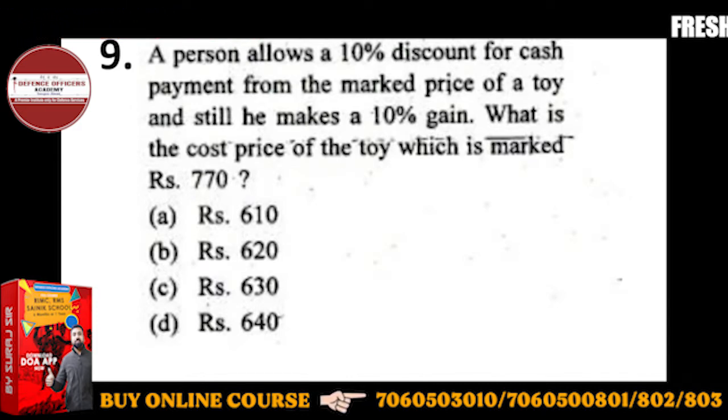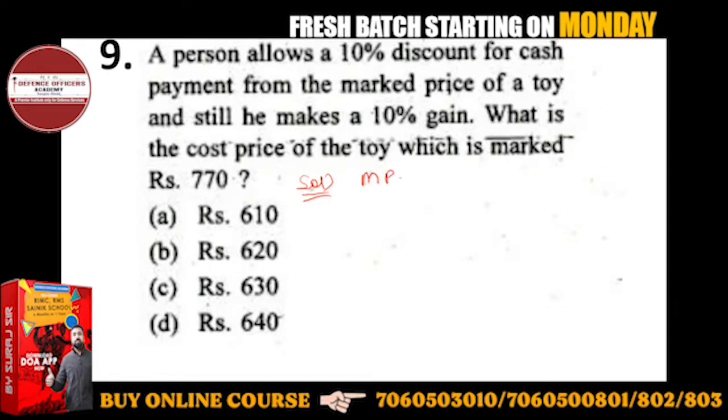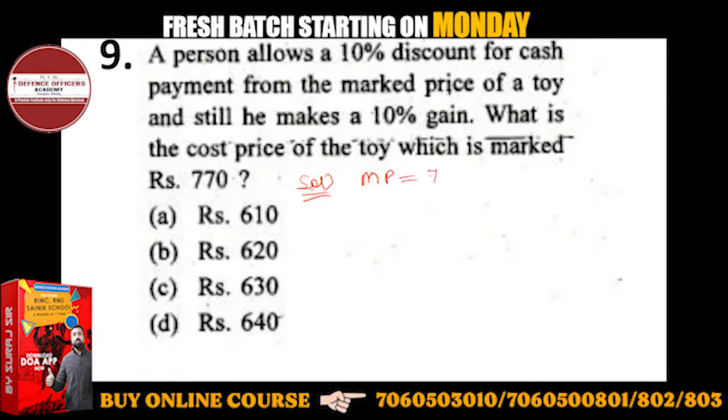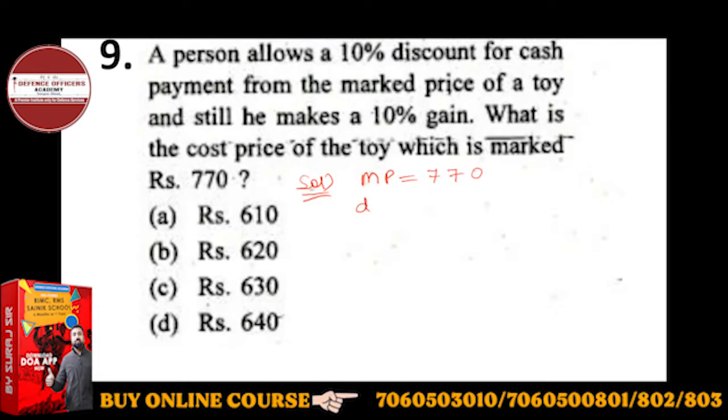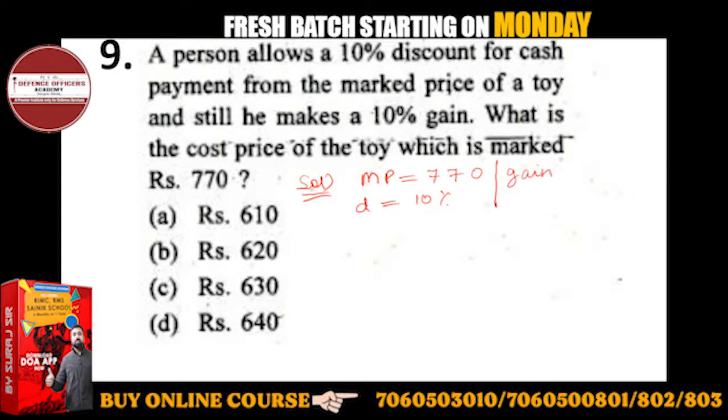Mark price is given to you. If you look at the solution, mark price is 770, discount is 10%, and also gain or profit is given to you. If you want to find CP, first let's see that SP is a function of CP, but here in the case of discount, SP will be a function of MP.